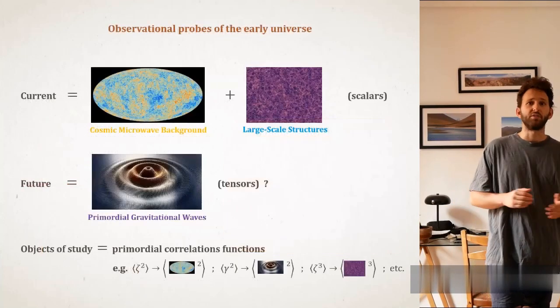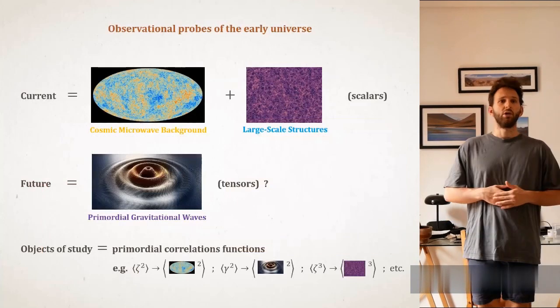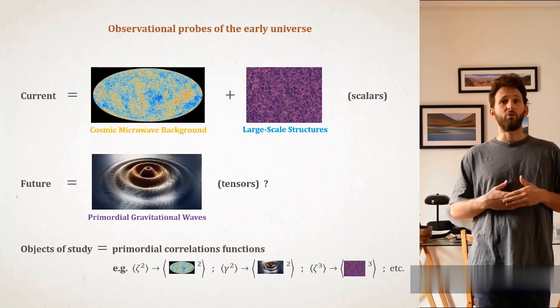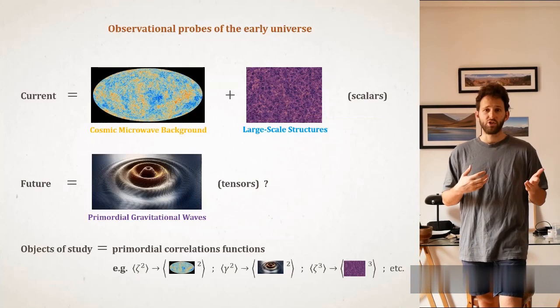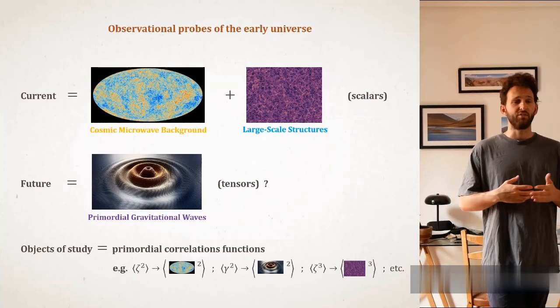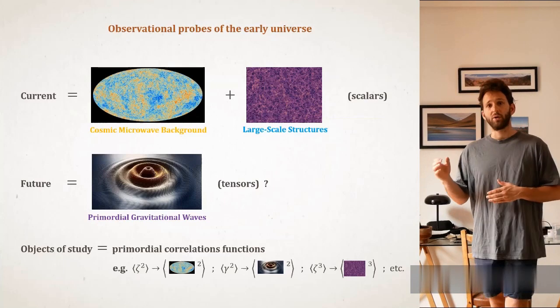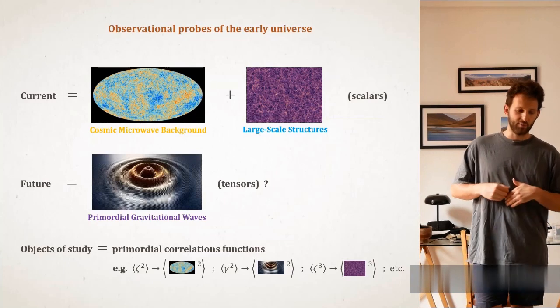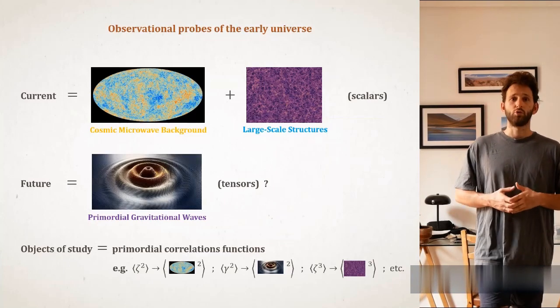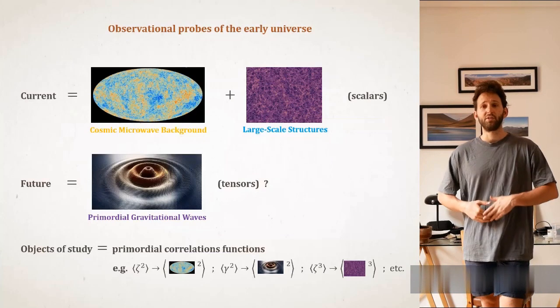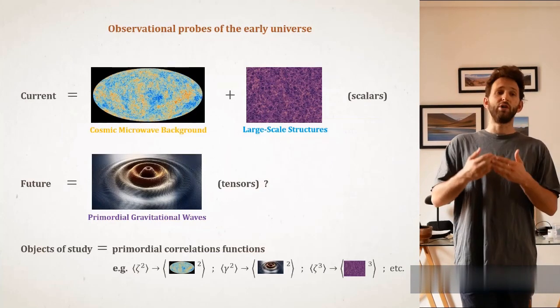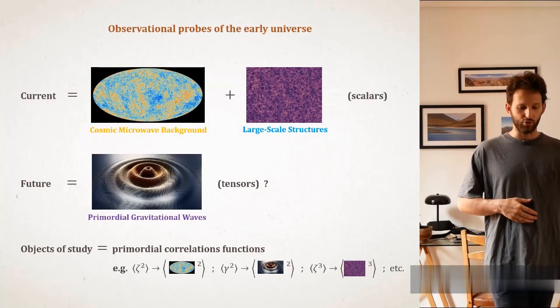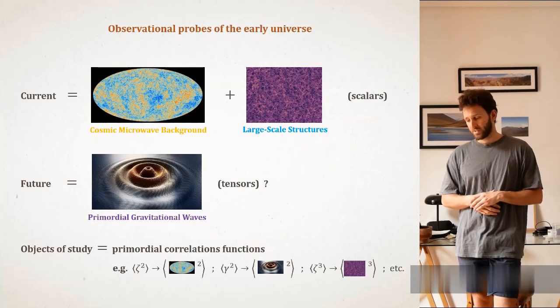But how do we probe the physics of inflation? How do we conclude that inflation is of such kind or such other kind? So instead of a collider experiment for particle physics, we have cosmological observations. And these observations are so far mainly observations of the cosmic microwave background and of large-scale structures. In the future, however, we also expect to have observations of the cosmological gravitational background to complete the picture. In particular, the object of study will be the statistics of the initial fluctuations, so the correlation functions of zeta in the scalar sector and gamma in the tensor sector.